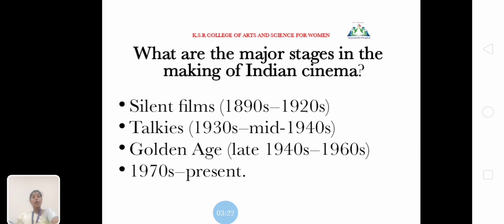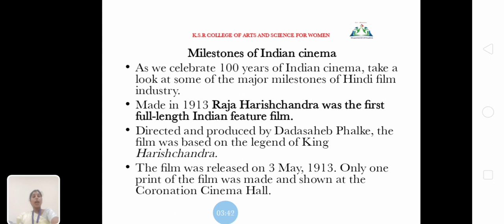What are the major stages in the making of Indian cinema? As we celebrate 100 years of Indian cinema, let's look at some of the major milestones of the Hindi film industry. Made in 1913, Raja Harishchandra was the first full-length Indian feature film, directed and produced by Dadasaheb Phalke. The film was based on the legend of King Harishchandra and was released on 3 May 1913. Only one print of the film was made and shown at the Coronation Cinema Hall.